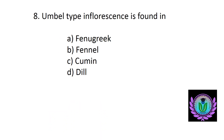Umbel type inflorescence is found in — option A: fenugreek, B: fennel, C: cumin, D: dill. The answer is option C, cumin.